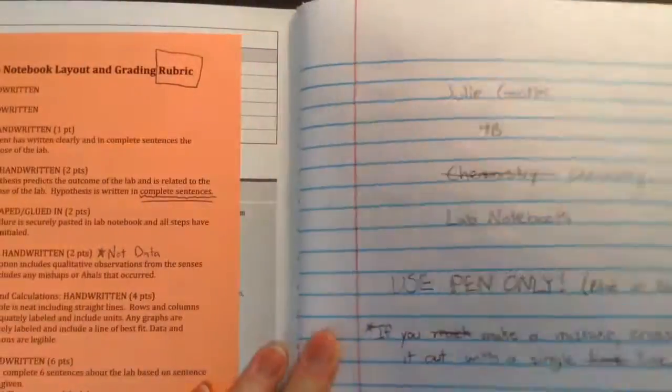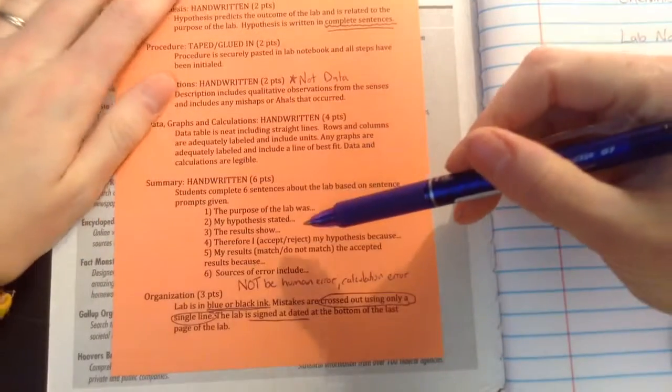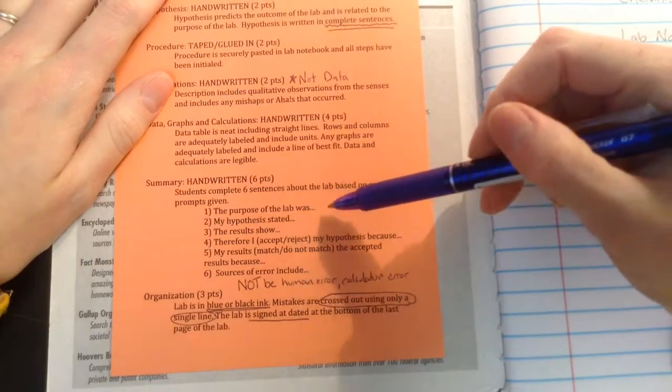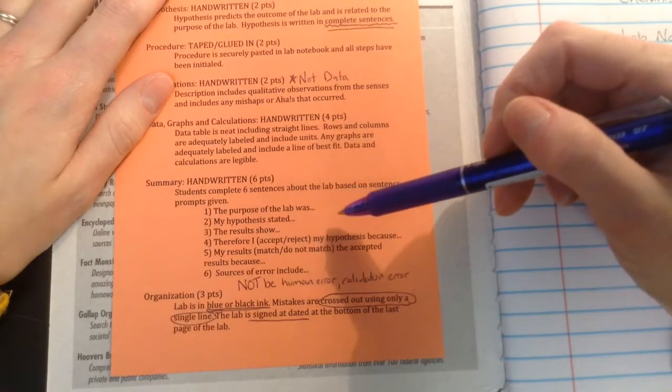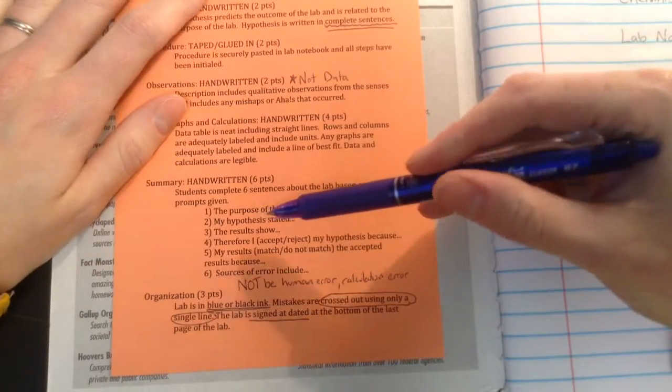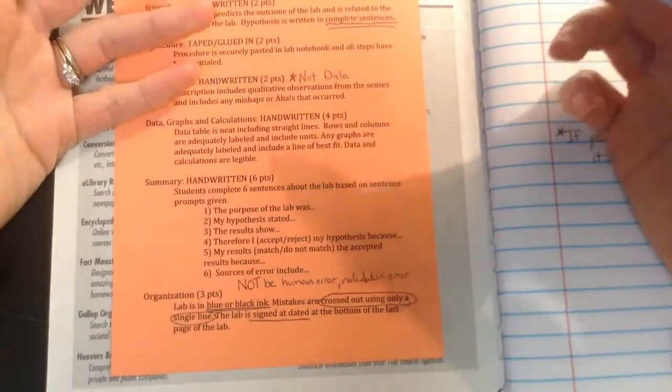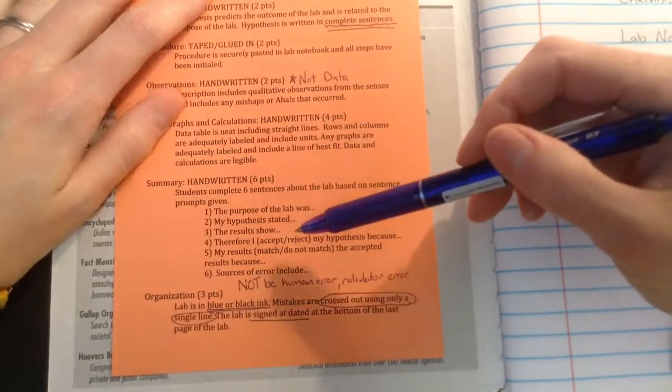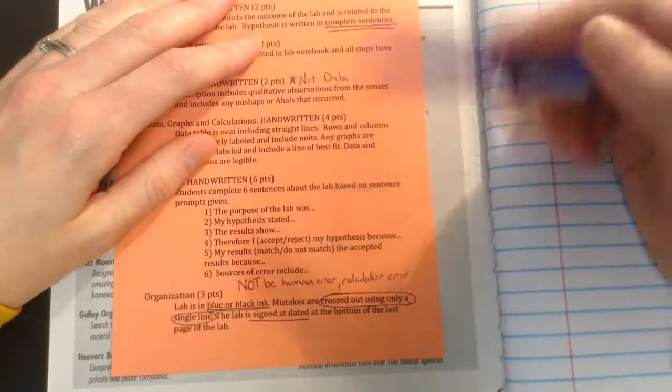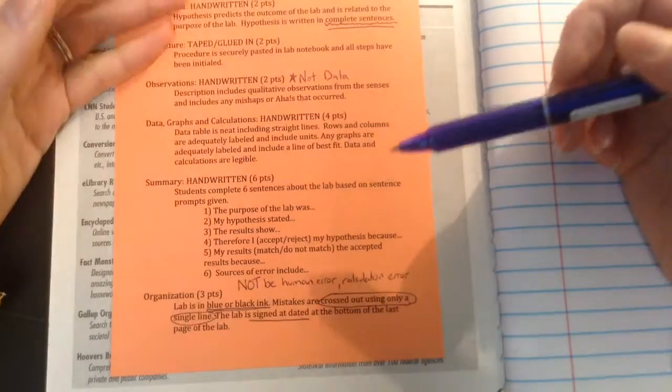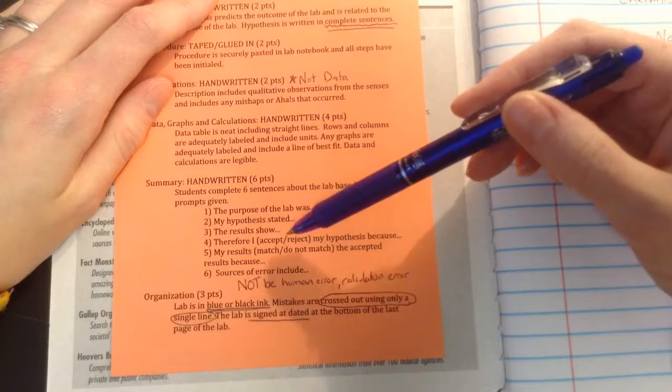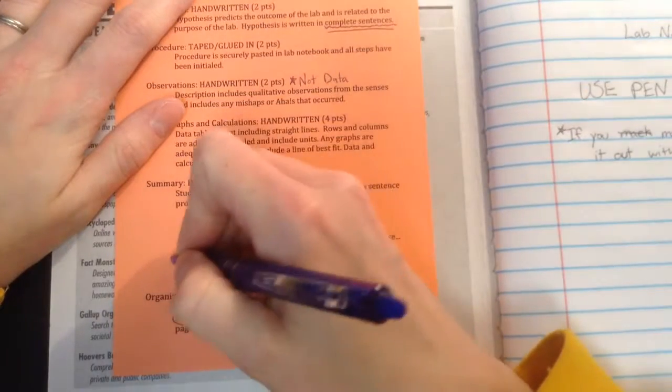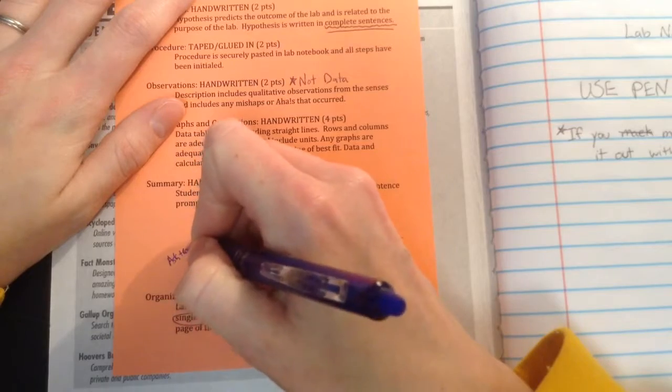Now remember, the summary has those six sentences. Let me show it to you right here. So when you're done, if you want to come back and work on your summary, the first question that you're going to answer is what was the purpose of the lab. So you're literally just going to write the purpose of this lab was to separate compounds into two groups. My hypothesis stated that these three would be grouped together and these others would be grouped together. The results show that these should be grouped together and these others should be grouped together. Therefore, I accept or reject my hypothesis because I was right or wrong or I had them grouped together right or wrong. My results match or do not match the accepted. For that one, you're going to have to ask your teacher what the results should have been.